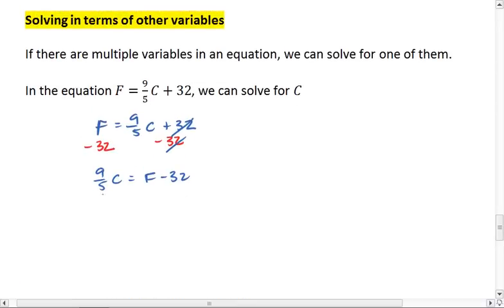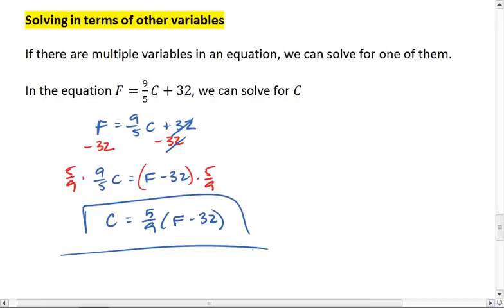We then can multiply both sides by 5 ninths. And we get C equals 5 ninths times the quantity F minus 32, which is the formula for plugging in degrees Fahrenheit and solving for degrees Celsius. And that is your final answer. We're simply rearranging these equations. You don't have to actually find a numeric value for C.